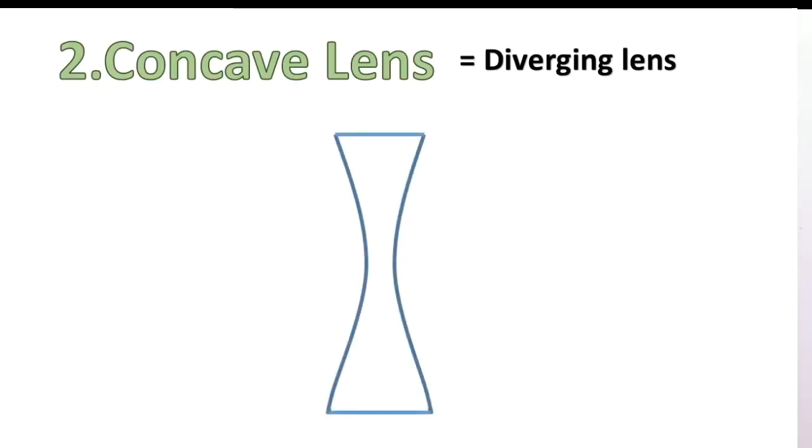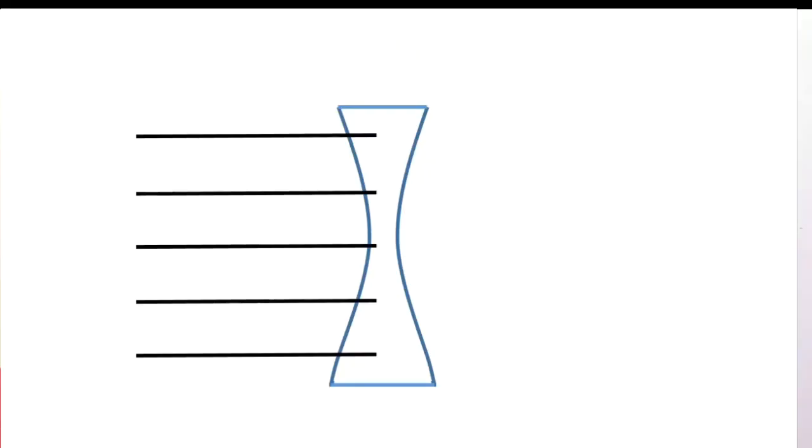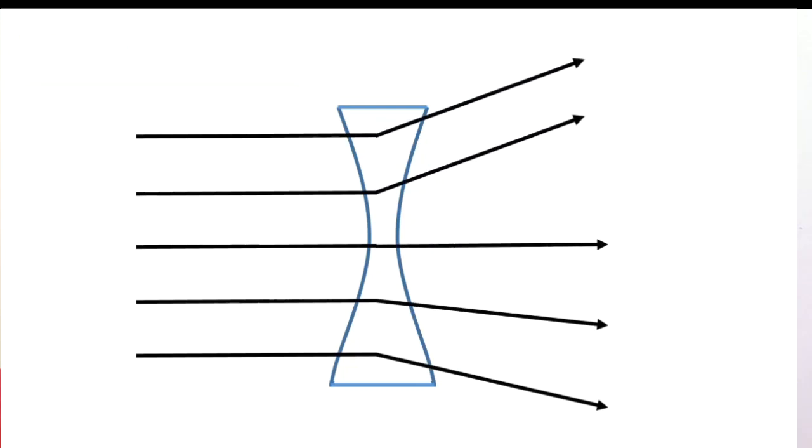Now let's move to concave lens. Concave lenses are called diverging lenses since they diverge the rays. A concave lens is thick in the periphery and thin in the middle — in other words, a lens which is bent inwards in the middle is called a concave lens. A concave lens has diverging action.